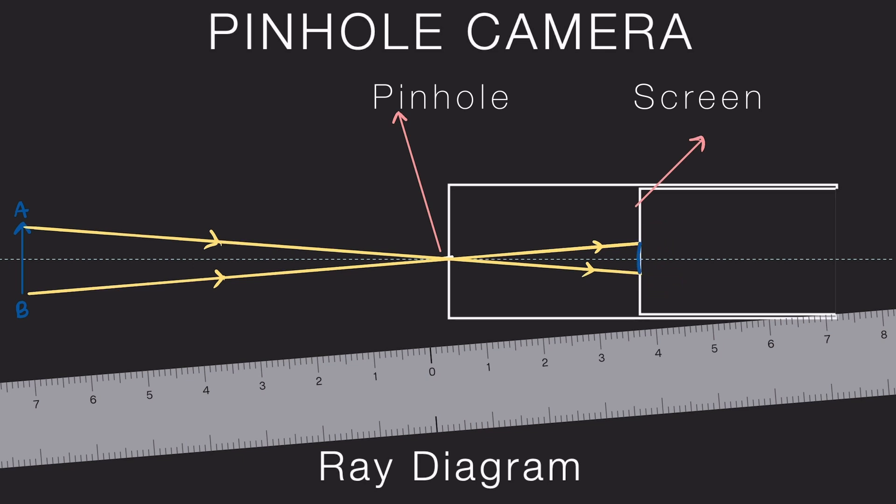So the top of the object forms at the bottom, and the bottom of the object forms at the top. That explains our inverted image. If I join these two points, we get the image inverted compared to the object. And that, right there, is the ray diagram for image formation in a pinhole camera.